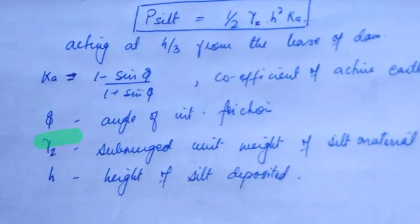Phi is the angle of internal friction. What is gamma z? The submerged unit weight of silt material. And h? h is the height of silt deposited.